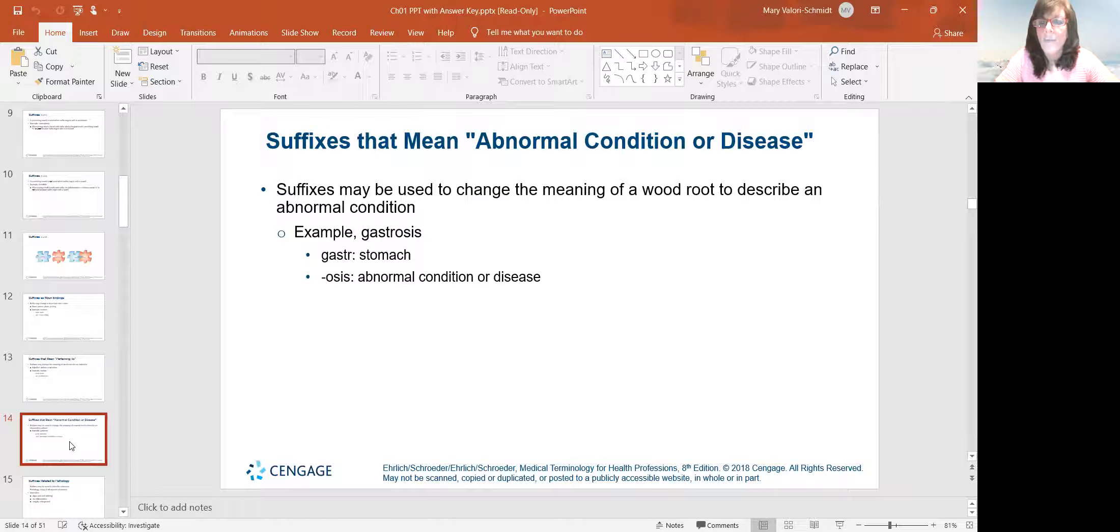Suffixes that mean abnormal condition or disease. Suffixes can change the meaning of the word root to describe something wrong with that body part or system. So they use the example gastrosis. Gastro, stomach, osis is something is wrong. It's broken. It's not working right. An abnormal condition or a disease, but nonspecific. So gastrosis, some kind of disease of the stomach.